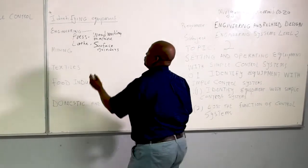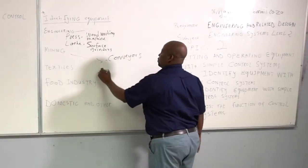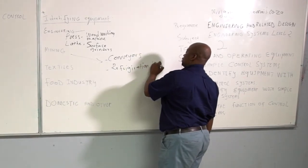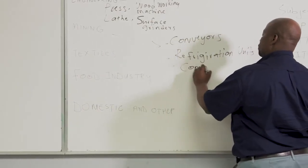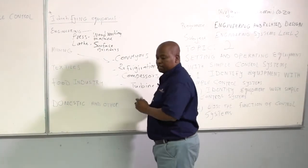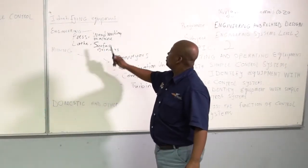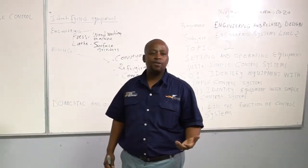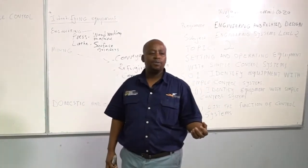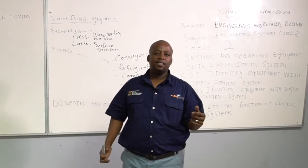In the mining industry, we can have a conveyor, we can have a refrigeration unit, we have also compressors and turbines. From engineering, a woodworking machine is the one that can be used for carpentry and manufacturing of carpets and so on. A lathe machine can be used in a fitting and turning workshop to cut different designs. A surface grinder is the one used for cutting different metals.